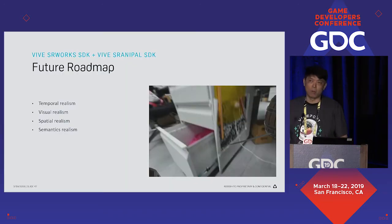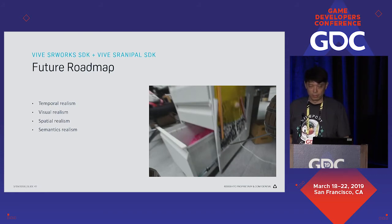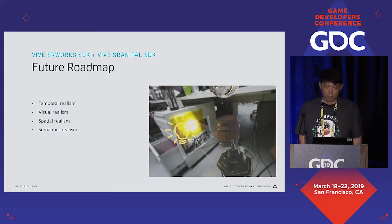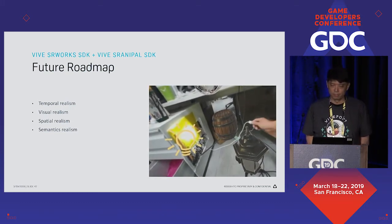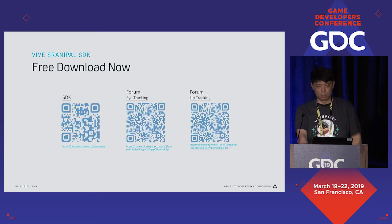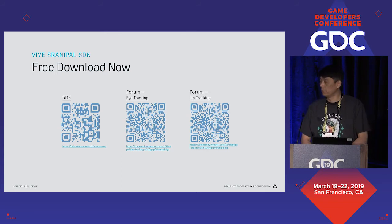To summarize: SRWorks and SRAnimal. For the future, we are continuously improving all aspects of experience. For temporal realism, we are always looking at ways to reduce latency. For visual realism, we will provide realistic lighting — for example, virtual objects will reflect real lighting, as shown in this video. We are providing this in the near future. For spatial realism, we are always seeking a better positioning algorithm. For semantic realism, we will provide more AI capability including emotion detection in the future. If you want to download the SRAnimal SDK, you can start from this SDK link. We have separate forums — one for eye tracking and one for lip tracking.